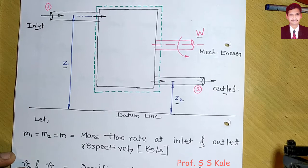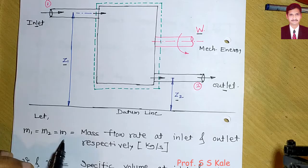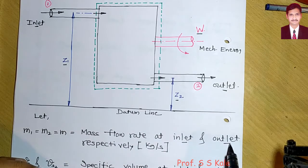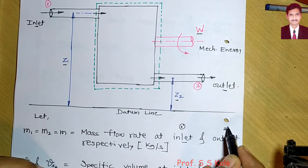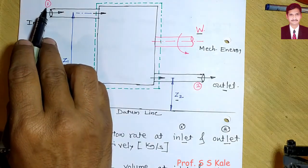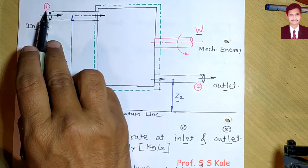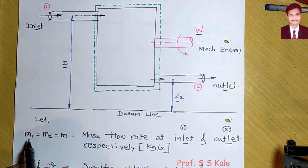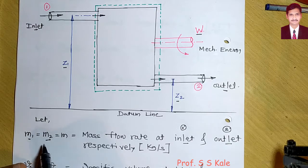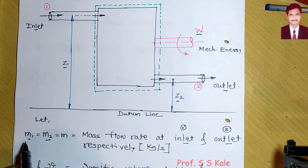Let's understand the notation. m1 = m2 = m is the mass flow rate at inlet and outlet. Suffix 1 denotes inlet and suffix 2 denotes outlet. According to the law of conservation of mass, mass at inlet equals mass at outlet.